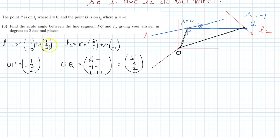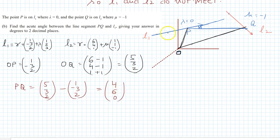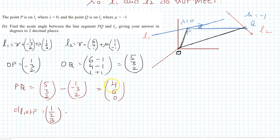The vector PQ equals Q minus P: (5, 3, 2) minus (1, minus 3, 2) equals (5 minus 1, 3 plus 3, 2 minus 2) equals (4, 6, 0). The direction vector of L1 at point P is (1, 2, 3). So we have PQ equals (4, 6, 0) and the direction vector of L1 equals (1, 2, 3).